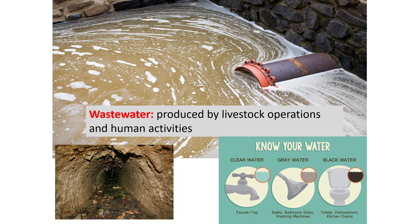Wastewater is produced by livestock operations and human activities. There are different types of water: clear water is clean; gray water is used water from baths, bathroom sinks, and washing machines; and black water is from toilets, dishwashers, and kitchen drains. Gray water doesn't have much bacteria or organic material, whereas black water does. If you go camping in an RV, you might have a clean water tank, a gray water tank, and a black water tank — the gray water doesn't have to be treated as much as the black water.